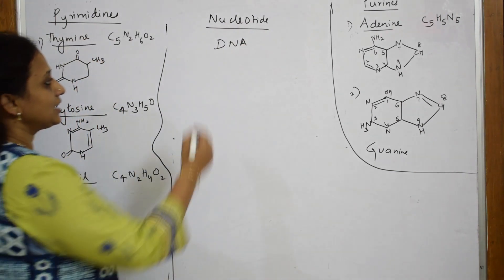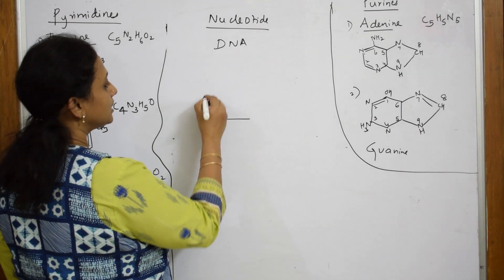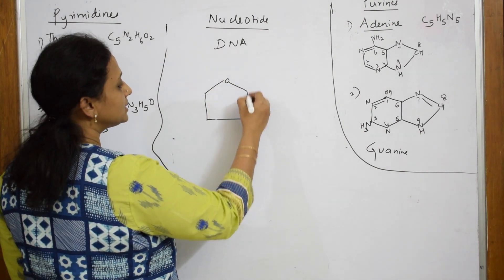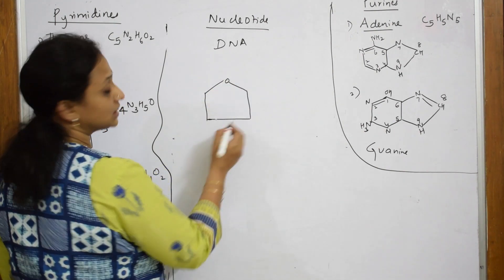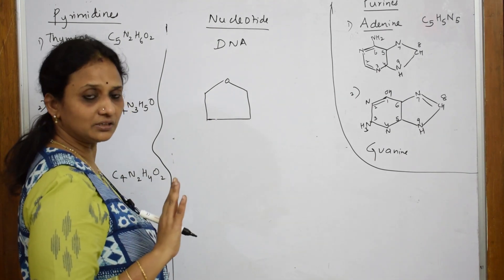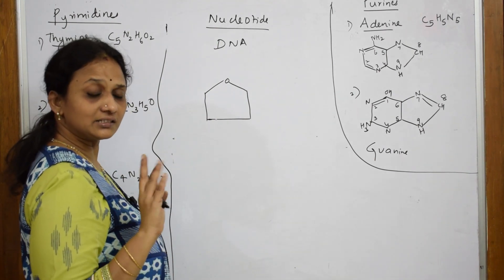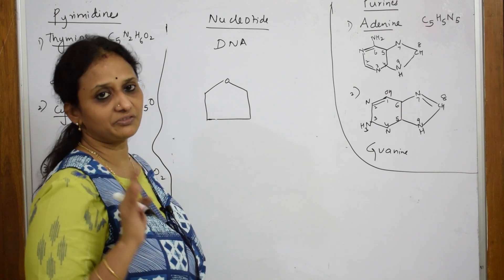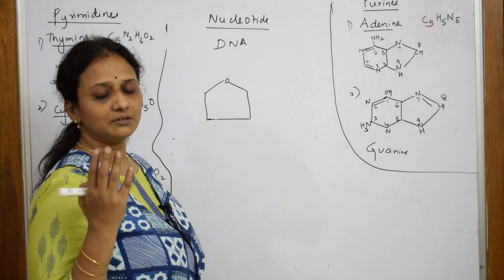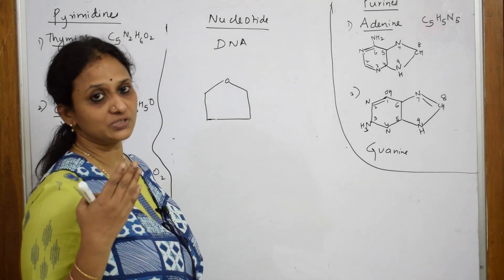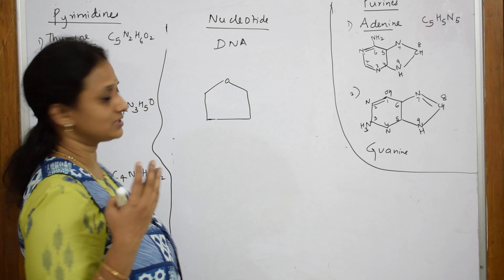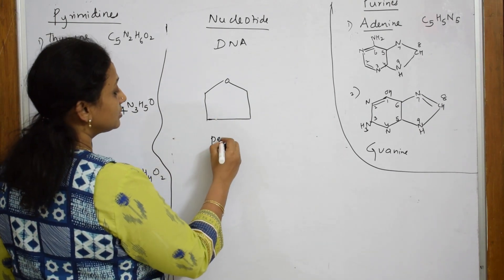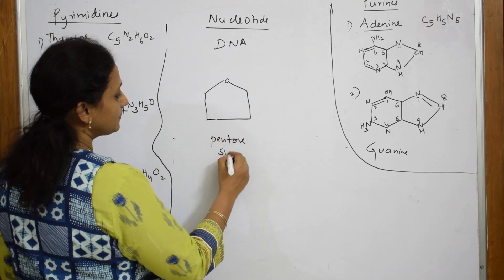This DNA contains one pentose sugar. That pentose sugar is deoxyribose — it is a pentose sugar and it is deoxyribose. In its structure, which I have already shown in a previous video on types of monosaccharides, please refer to that. In deoxyribose, this is your pentose sugar.